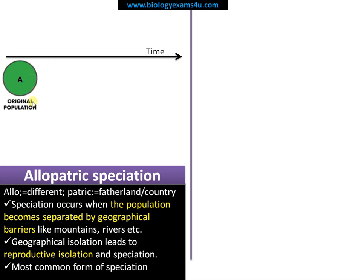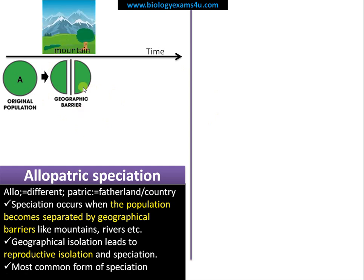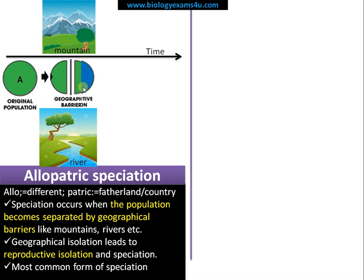A population can be referred to as individuals of the same species living in a particular region. This is population A. Due to some natural reasons, a geographical barrier is formed — maybe a mountain due to an earthquake, or a river, or anything like that. Then this population is reproductively isolated, forming two populations.